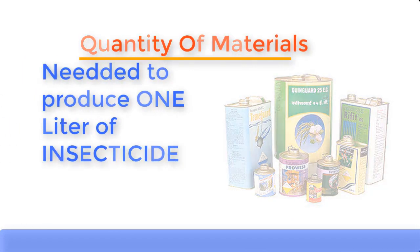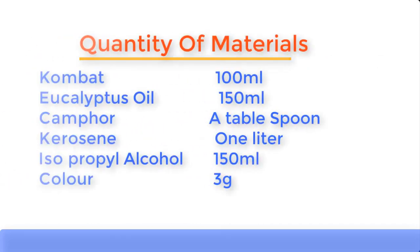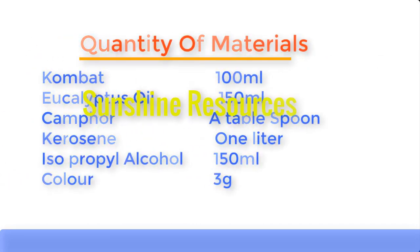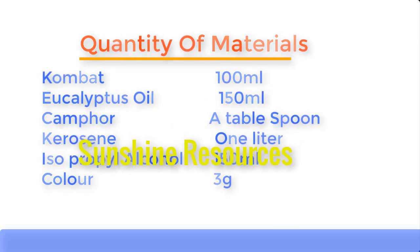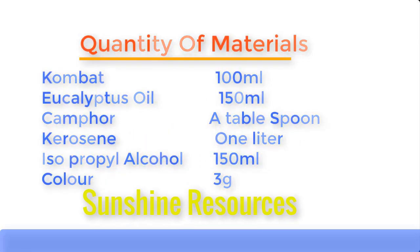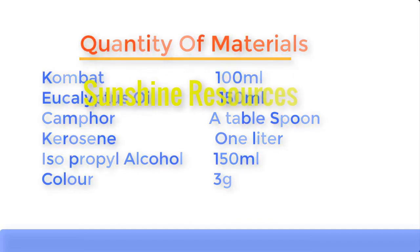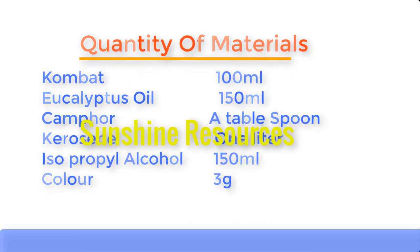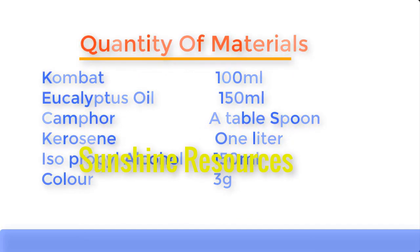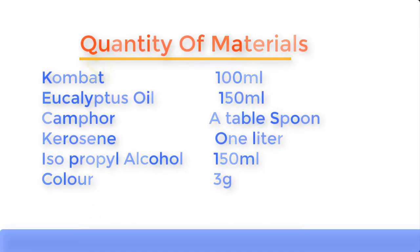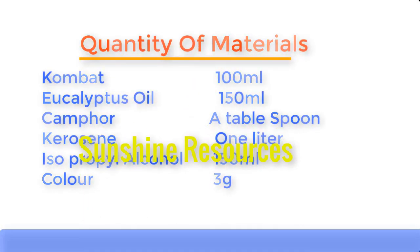Now let's establish the quantity of materials needed to produce one liter of insecticide: compact 100 ml, eucalyptus oil 150 ml, camphor one tablespoon, kerosene one liter, isopropyl alcohol (IPA) 150 ml, and color 3 grams.